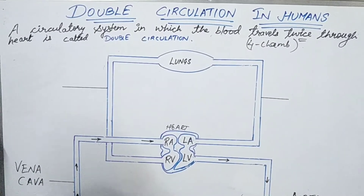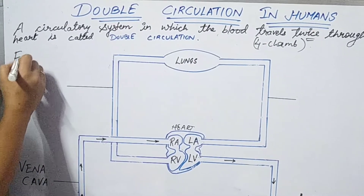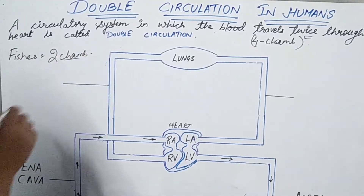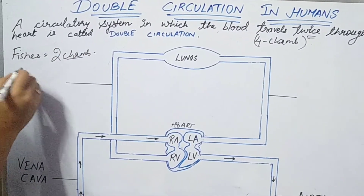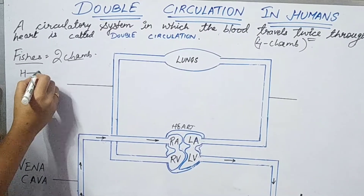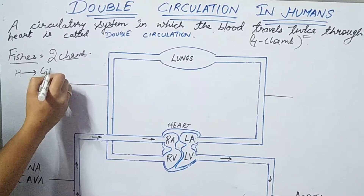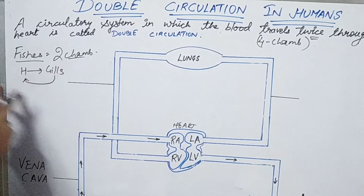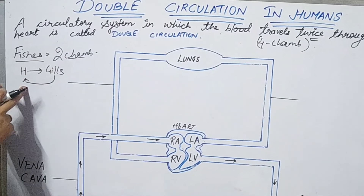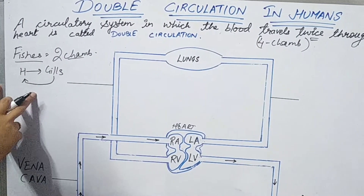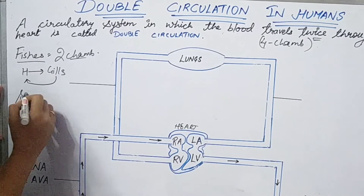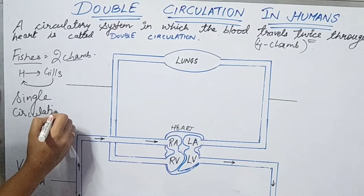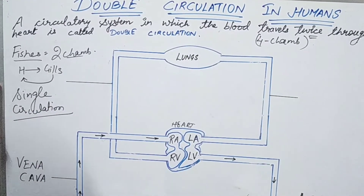This demonstrates the double circulatory system. In contrast, animals such as fish have a two-chambered heart with gills for gas exchange. Blood travels from the heart to the gills and back to the heart — a single cycle. That's why fish show a single circulatory system.